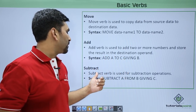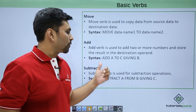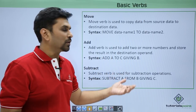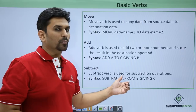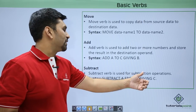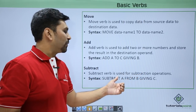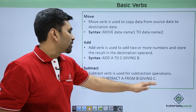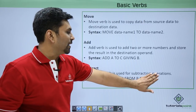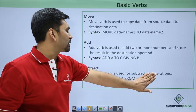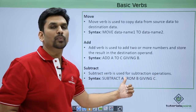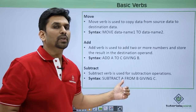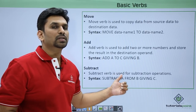Similarly we have subtract. It is used to subtract one variable from another, like 'subtract A from B giving C'. So it will subtract A from B and store the result in C. If you eliminate the giving clause and simply write 'subtract A from B', then it will subtract A from B and store the result in B itself.